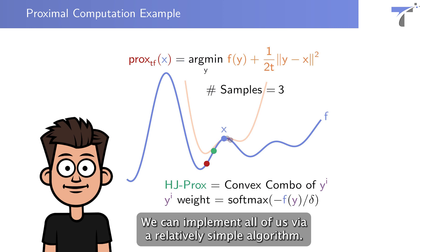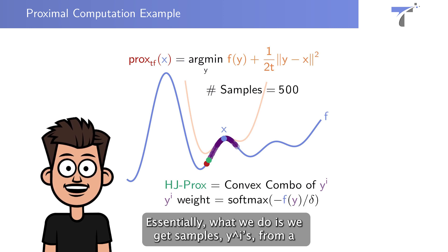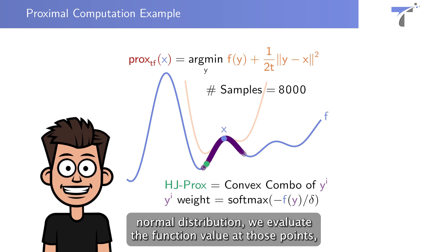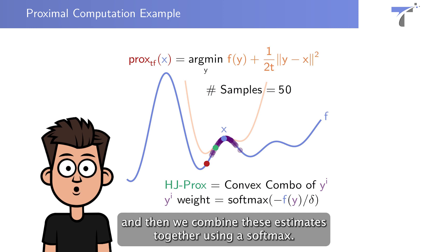We can implement all of this via a relatively simple algorithm. Essentially, what we do is we get samples, yi's, from a normal distribution, we evaluate the function value at those points, and then we combine these estimates together using a softmax.